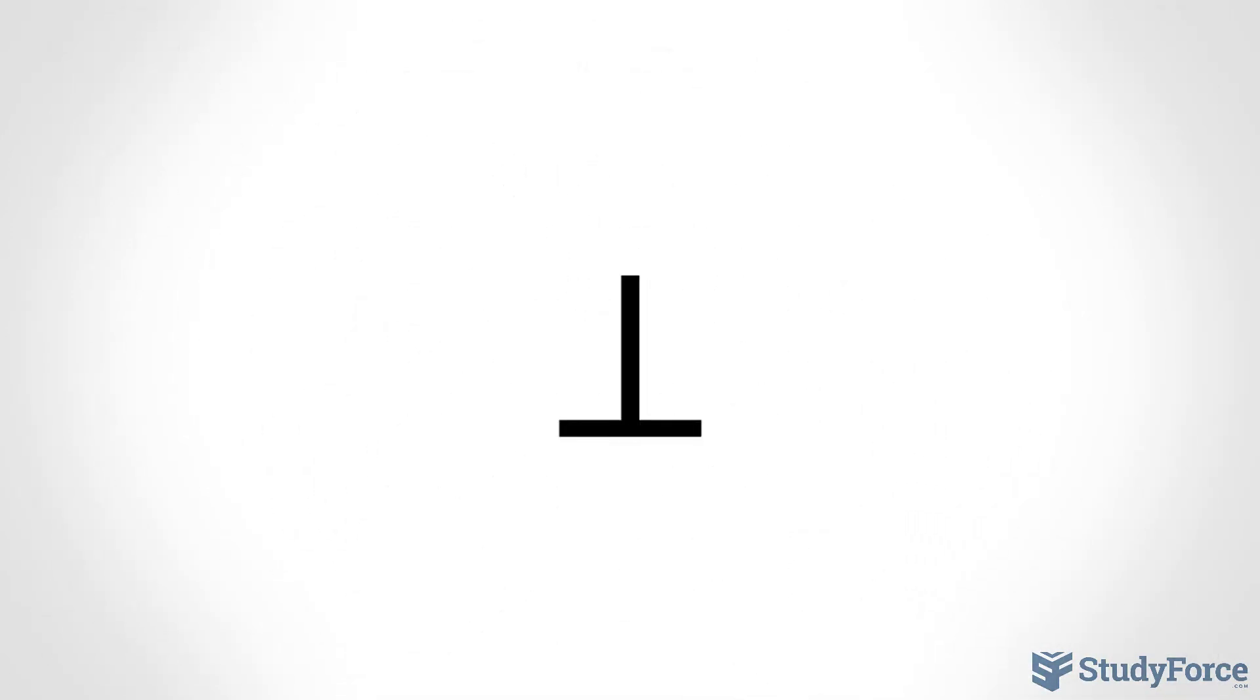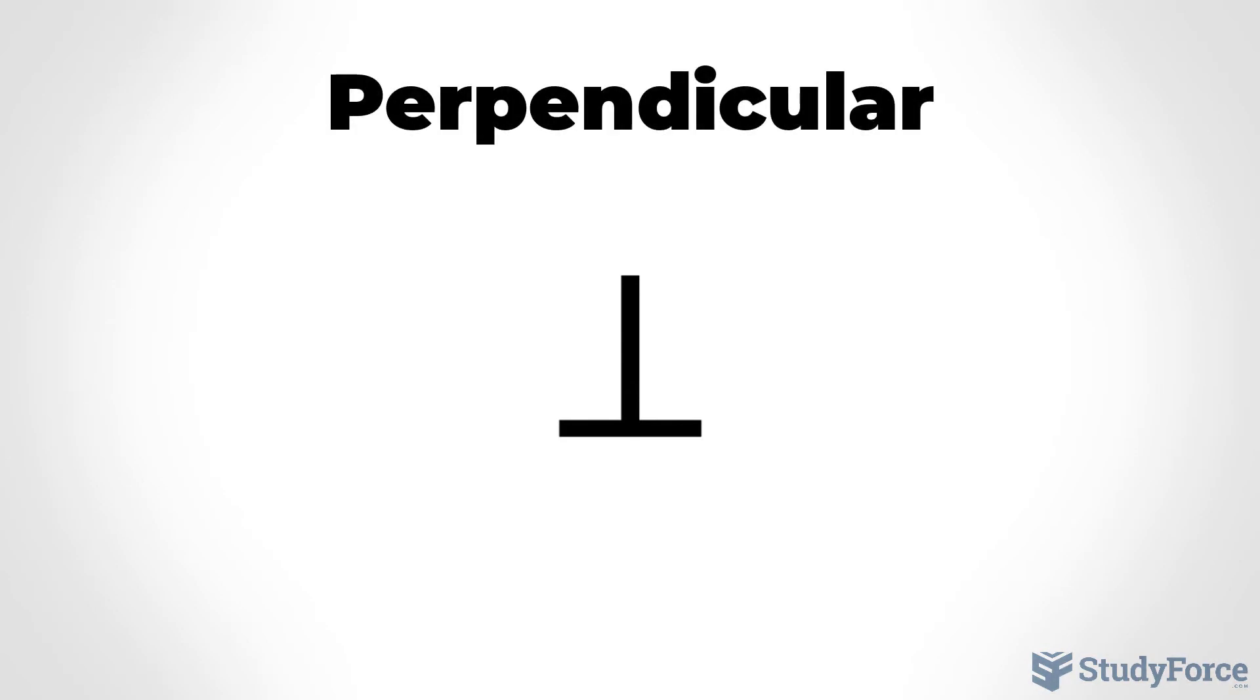What in the world does this upside down T mean? In geometry, whenever two lines are perpendicular to one another, we use this symbol to state that. Two lines are perpendicular if they are positioned at 90 degrees to one another.